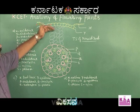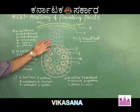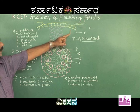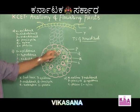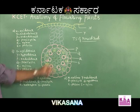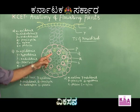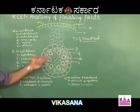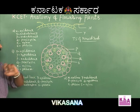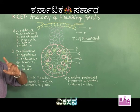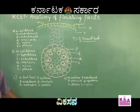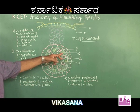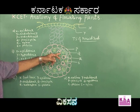Next is the cortex region. The cortex is labeled accordingly. P is the endodermis layer — the innermost layer of the cortex. After the endodermis, the outermost layer of the stele is the pericycle, labeled Q. That is the pericycle zone.